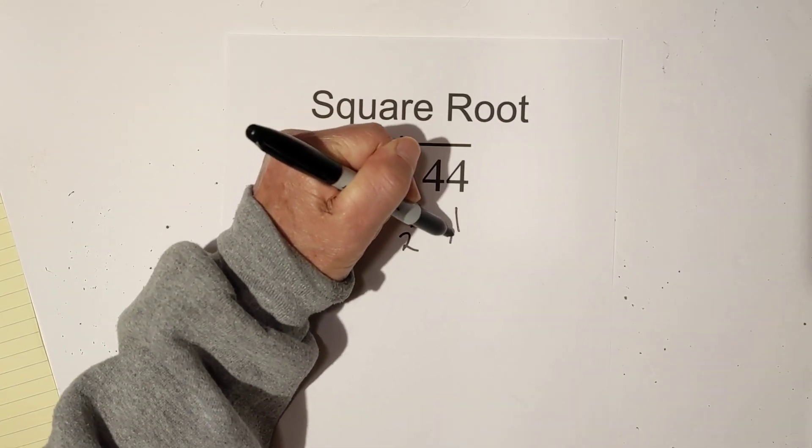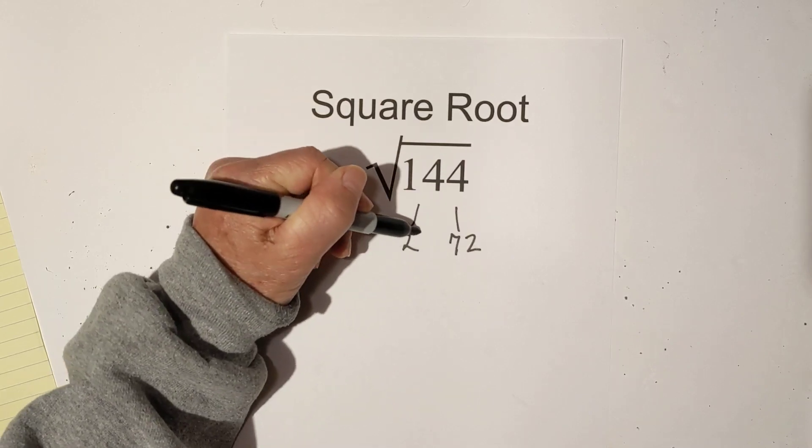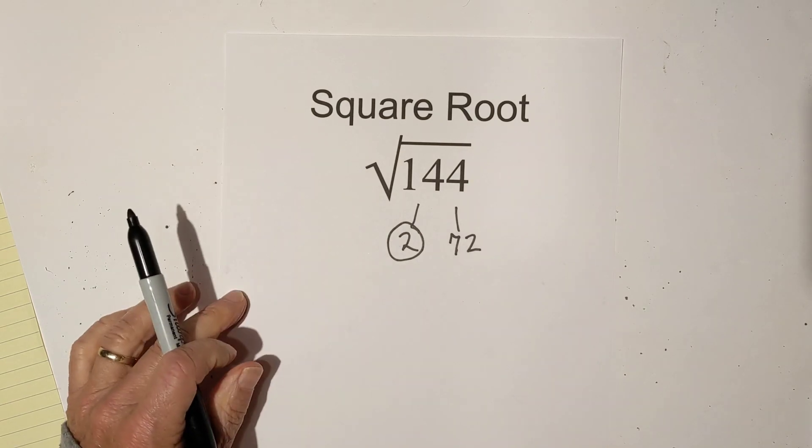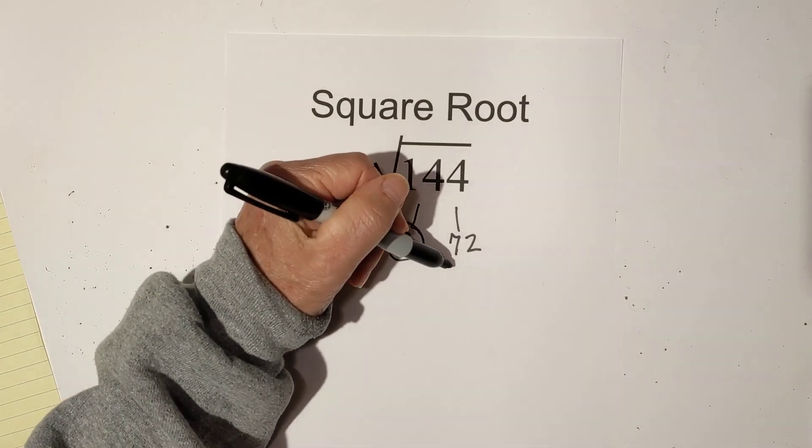First, I like to start with twos because it's pretty easy to divide and it ends in an even number. So 2 times 72 equals 144. I circle the 2 because it is prime.